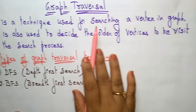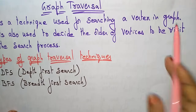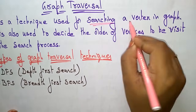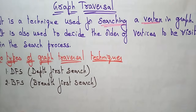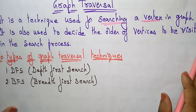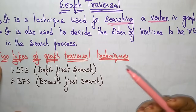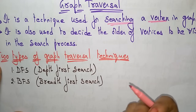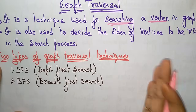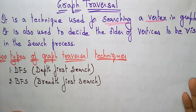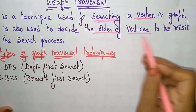Graph traversal is a technique used for searching a vertex in a graph — it is one of the methods for searching a particular vertex. It is also used to decide the order of vertices to be visited in the search process, meaning which vertex we visit first and which vertex we visit next.